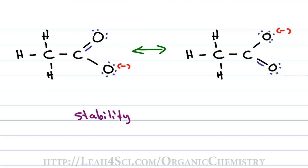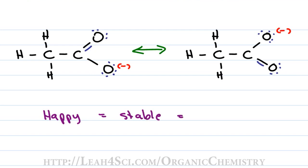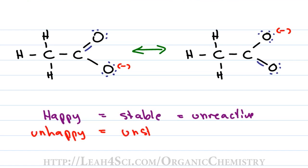If a pair of electrons, an atom, or a molecule is stable, it's going to be happy. If something is happy, it's going to be stable and it tends to be unreactive. On the other hand, if something is unhappy, it's going to be unstable and therefore reactive. With mechanisms, you'll find that the unhappier, higher energy pair of electrons is likely to attack something.